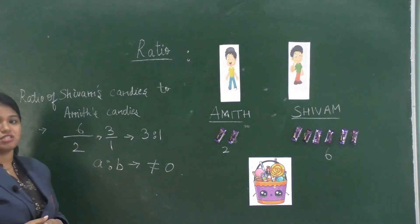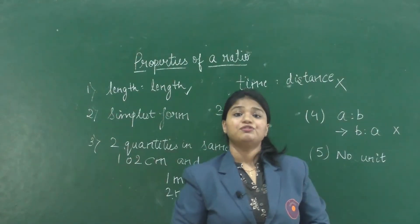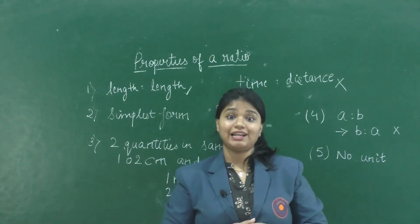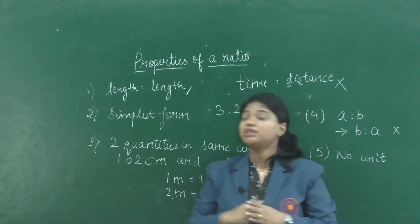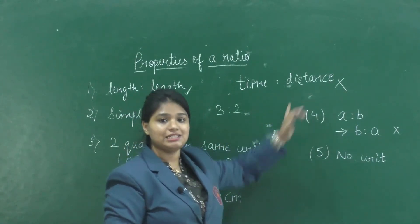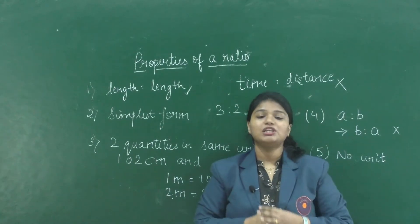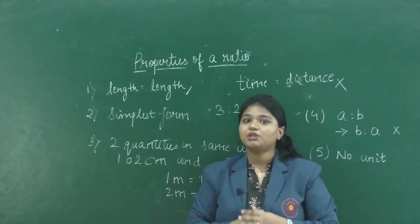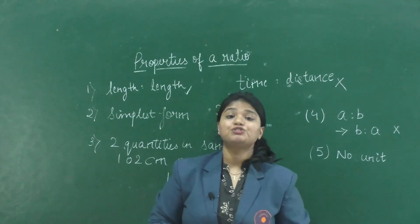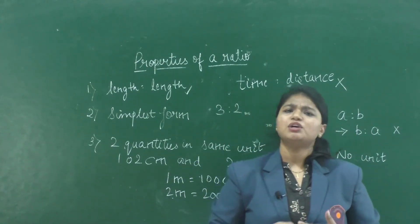The first term is known as the antecedent and the second term is known as the consequent. Now let's learn about properties of a ratio. First, a ratio exists between two quantities of the same kind — a ratio can exist between a length and a length, but not between time and distance. Second, a ratio is always expressed in its simplest or lowest form.